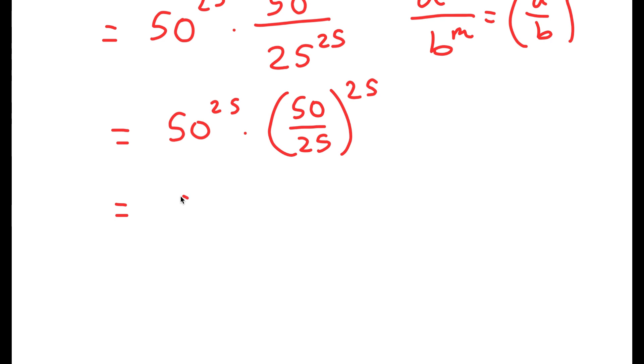This turns into 50 to the power of 25 times — well, 50 divided by 25 is 2 — so times 2 to the power of 25.